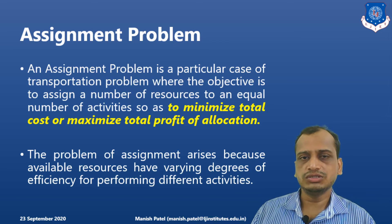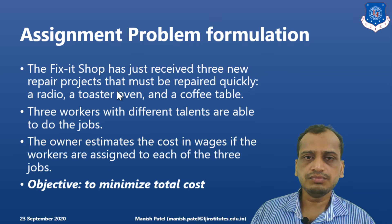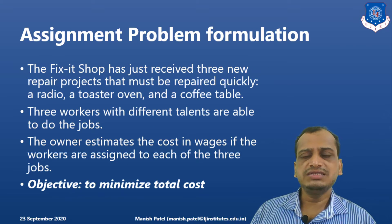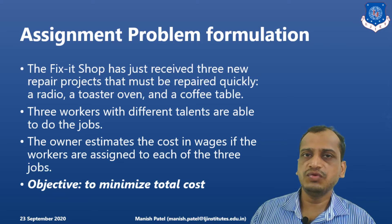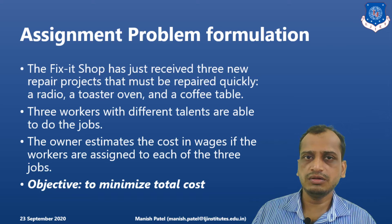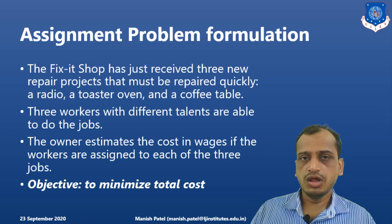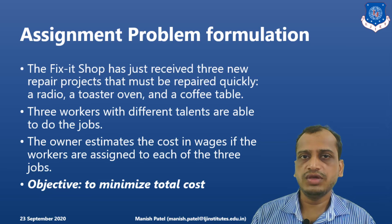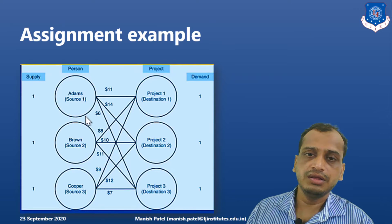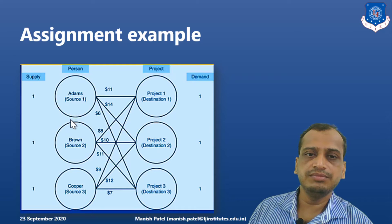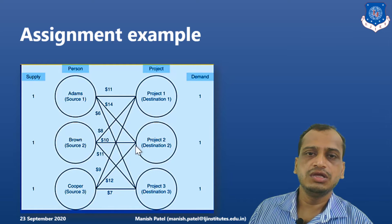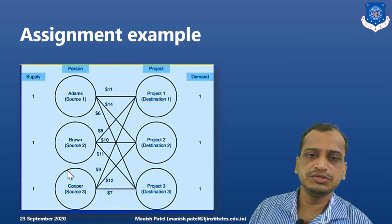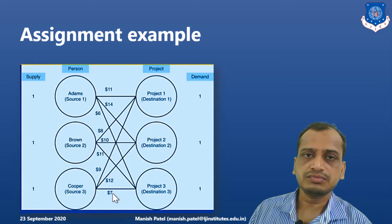Another example from industry: the Fix-It Shop has received three repair projects, and three workers — Adam, Brown, and Cooper — are available. The company wants to assign these projects to the workers with the objective of minimizing the total cost. The cost for each worker doing each project is given, and it is similar to a transportation problem with sources, destinations, and different costs.